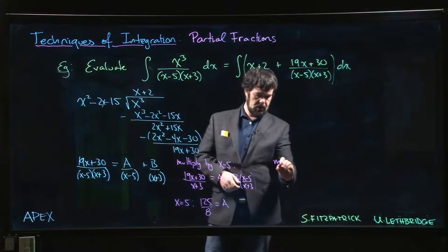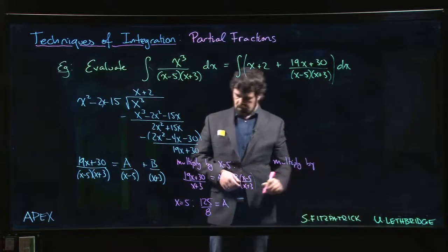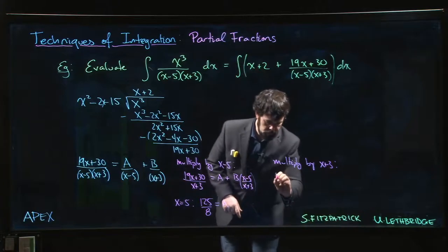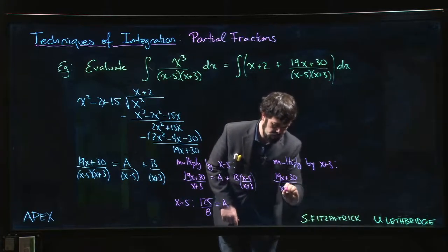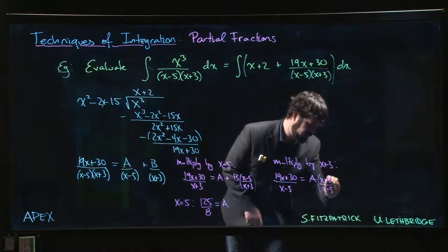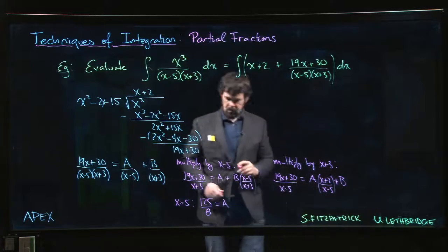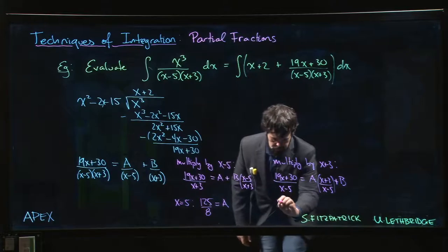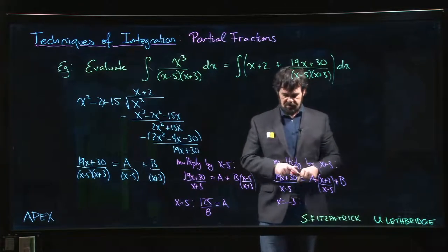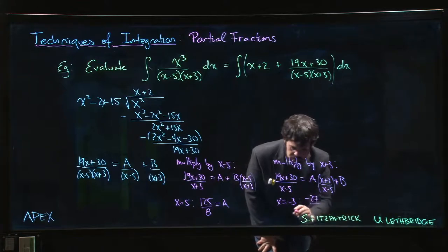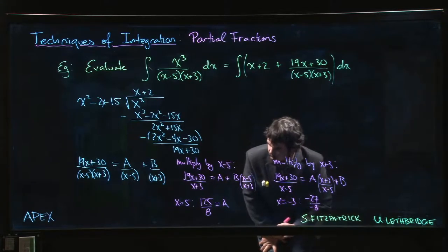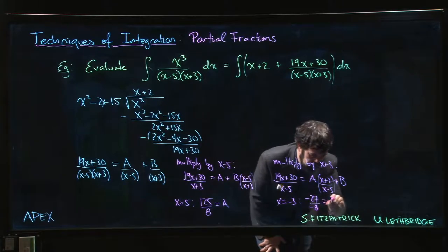If I multiply by (x plus 3), what am I going to get? I'm going to get 19x plus 30 over (x minus 5) is equal to a times (x plus 3) over (x minus 5) plus b. If I put x equal to minus 3, what do I get? So 19 times 3 is 57. I get minus 27 over minus 8, right - minus 3 minus 5. Yeah, minus 27 over minus 8 equals b. Not so bad.